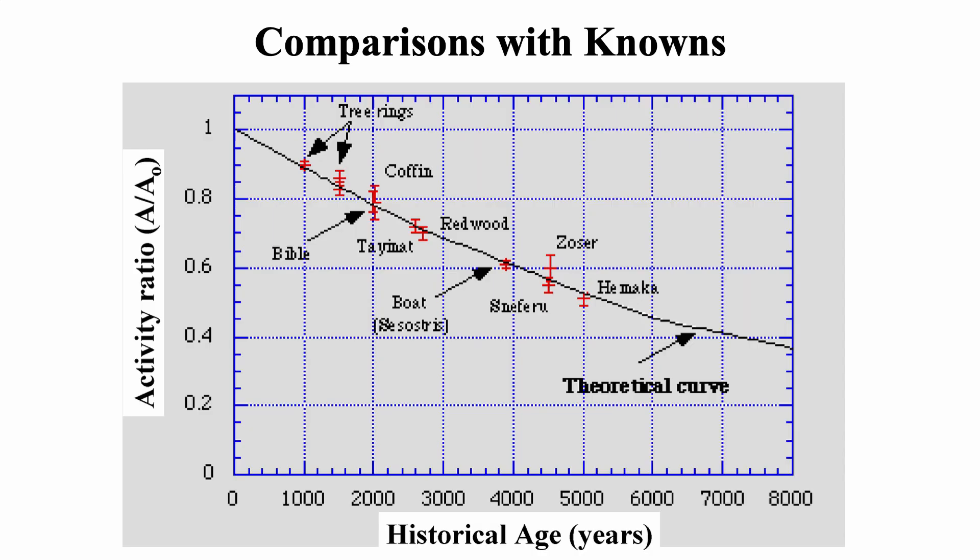This gives you the activity ratio of decays versus expected decays versus historical age. The red ones are the knowns. You can see that the theoretical curve goes through the knowns quite well. Carbon-14 dating is really quite good.